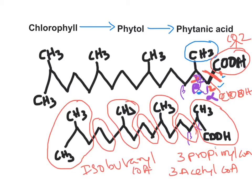Isobutyryl CoA is ultimately converted to propionyl CoA. So overall from oxidation of phytanic acid, we get four propionyl CoA, three acetyl CoA, and two molecules of CO₂ — one from conversion of phytanic acid to pristanic acid, and another from conversion of isobutyryl CoA to propionyl CoA.